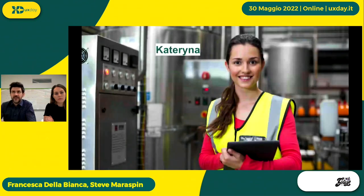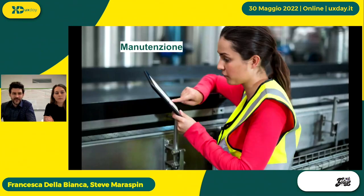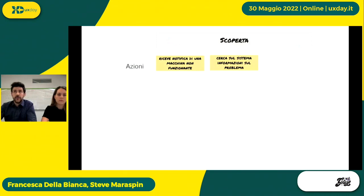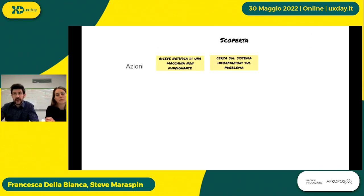Identificati gli attori, presentiamo Caterina, che si occupa di manutenzione, la nostra prima protagonista di questo talk. Adottiamo un mapping per capire, nel contesto degli eventi prima descritto, quale sarà l'esperienza di Caterina. Ad esempio, deve occuparsi di gestire un intervento e in una prima fase di scoperta, quando scopre di dover fare l'intervento, quali sono le azioni che fa? Come si comporta? Alcune azioni possono essere passive: riceve una comunicazione che c'è un'anomalia, oppure cerca sul sistema la tipologia di problema consultando le spie.